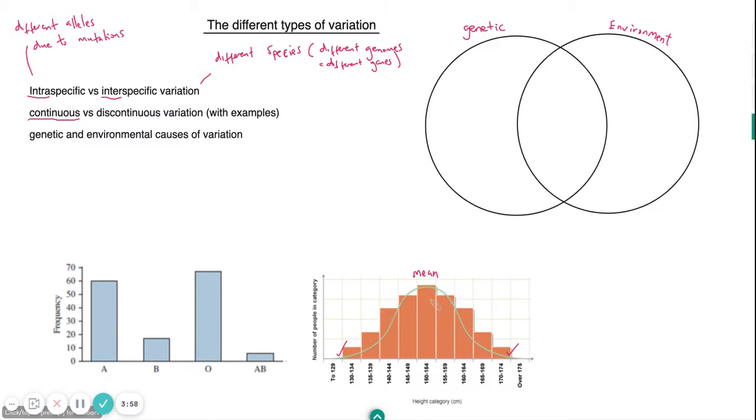So some traits like height are considered to be continuous. Well, the reason why they're continuous is because they're dictated by more than one gene, so it tends to be polygenic traits. Height is polygenic - it's not dictated by one gene, it's the combination of different genes working in conjunction with each other.